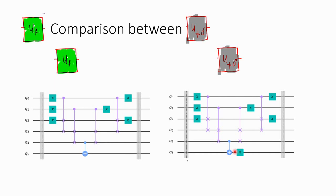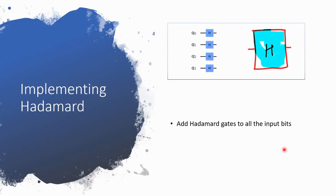Now let us see how to implement Hadamard. Hadamard is a basic gate in quantum computing. What it does is take a 0 bit and convert it into a superposition state where the bit is both 0 and 1 at the same time.